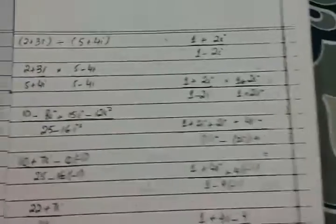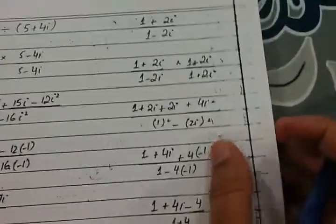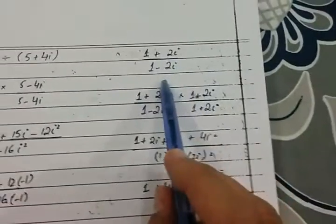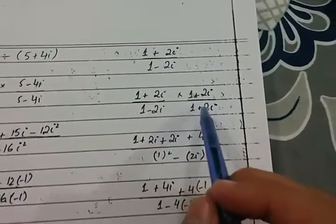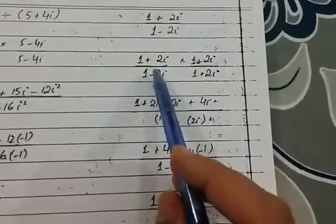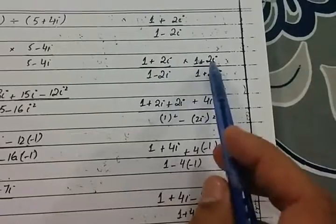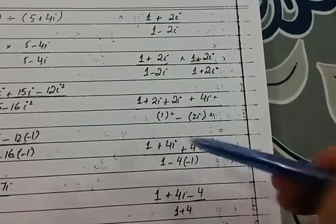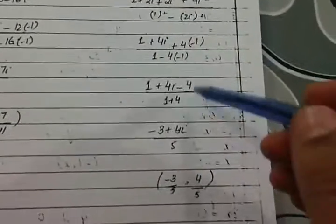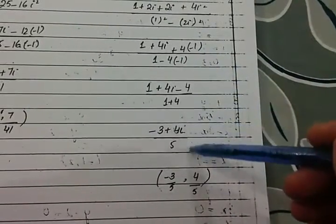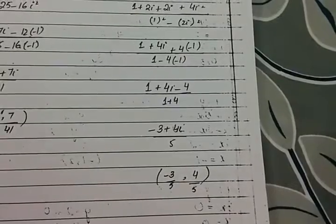Here is another example of division: 1 plus 2 iota divided by 1 minus 2 iota. We multiply and divide by the conjugate of the denominator. Now multiplying: 1 times 1, 1 times 2 iota, 2 iota times 1, and 2 iota times 2 iota gives 4 iota squared. Since iota squared is minus 1, we substitute and simplify in a straightforward manner. See you in the next lecture.